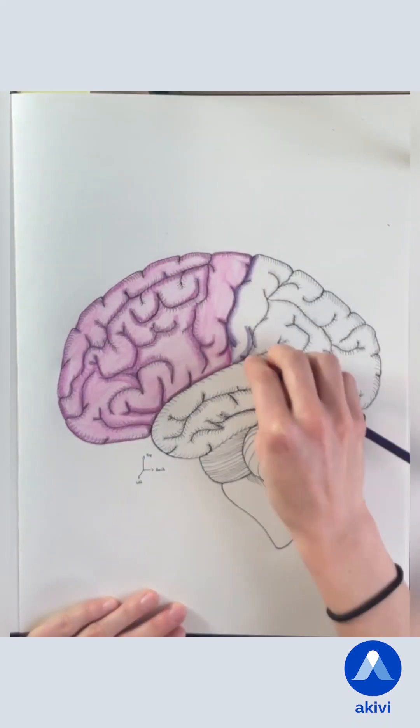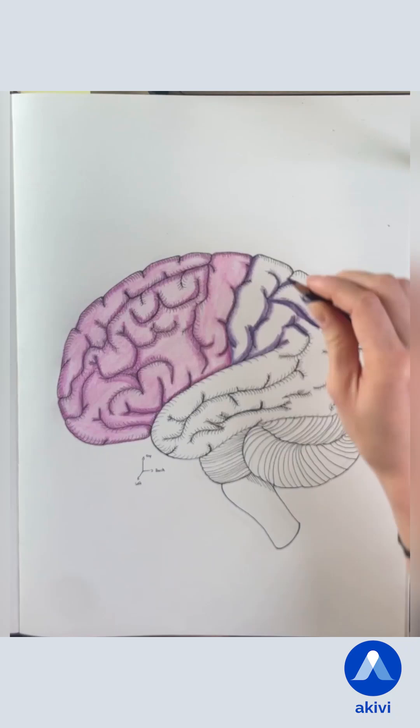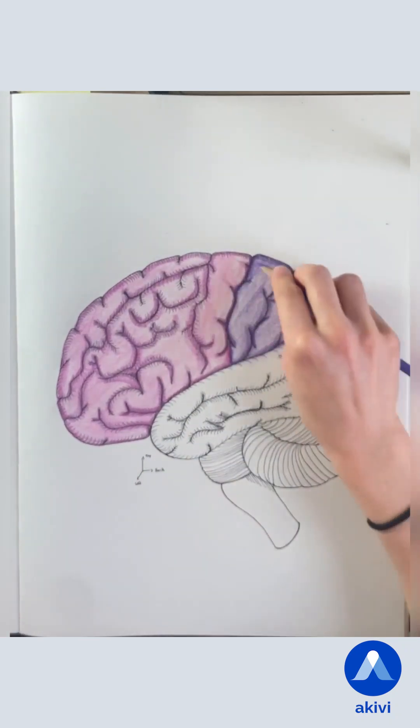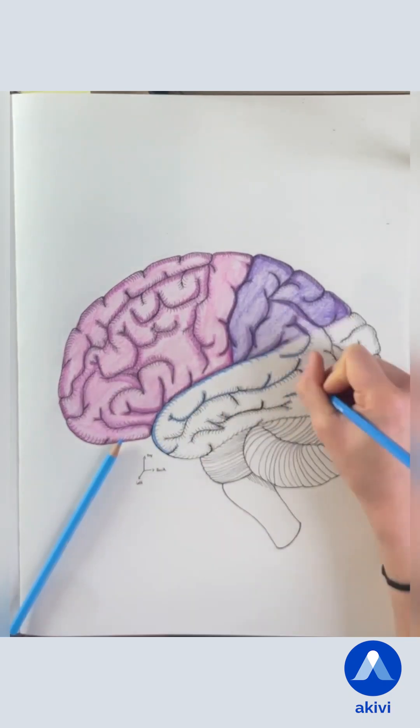The parietal lobe is responsible for sensory aspects, like proprioception and interpretation of other senses. Notably, Wernicke's area is parietal and responsible for the interpretation of language.